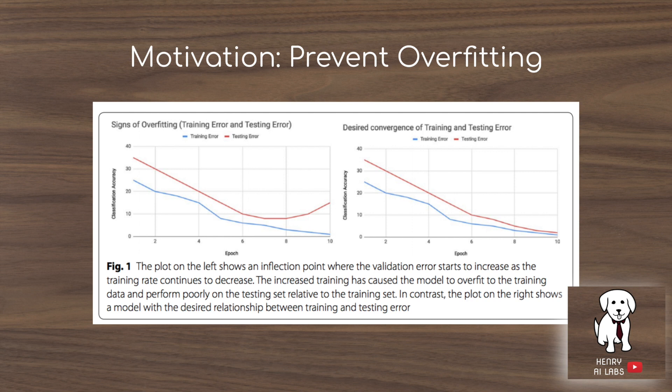The motivation behind data augmentation is to prevent overfitting. Overfitting refers to a phenomenon when deep learning models with high capacity exactly model the training data such that they don't generalize to the testing data. This is shown in this image where, as the training error decreases, the testing error actually increases rather than continuing to decrease with the training error.